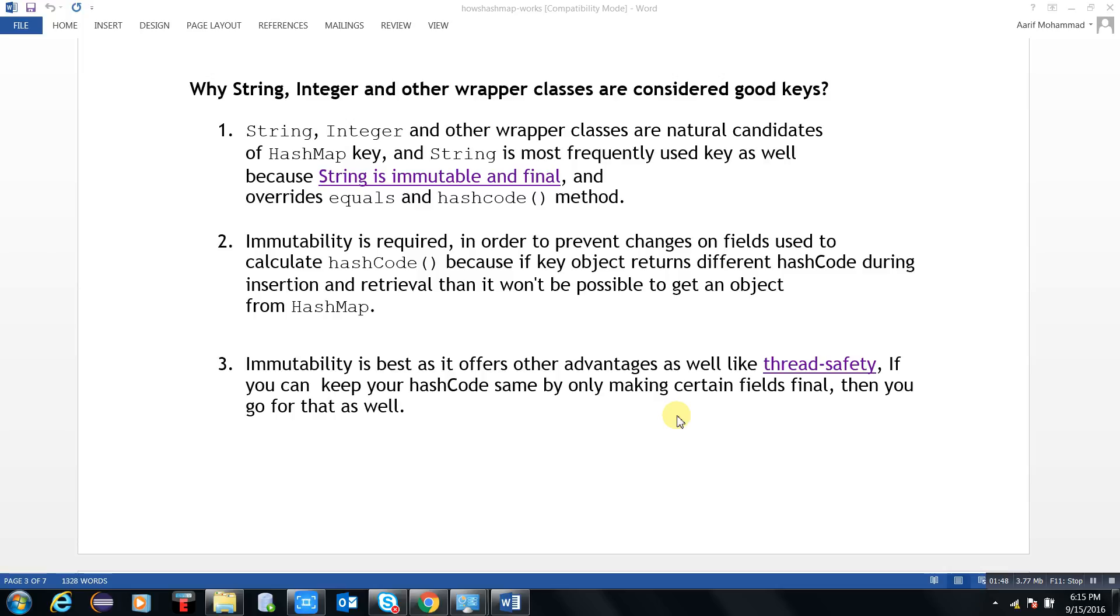Just like we are overriding equals and hashCode methods, immutability is the best advantage for thread safety. If you can keep your hashCode the same by only making certain fields final, then you can go for that as well. One of the key things is that String has the immutability concept.